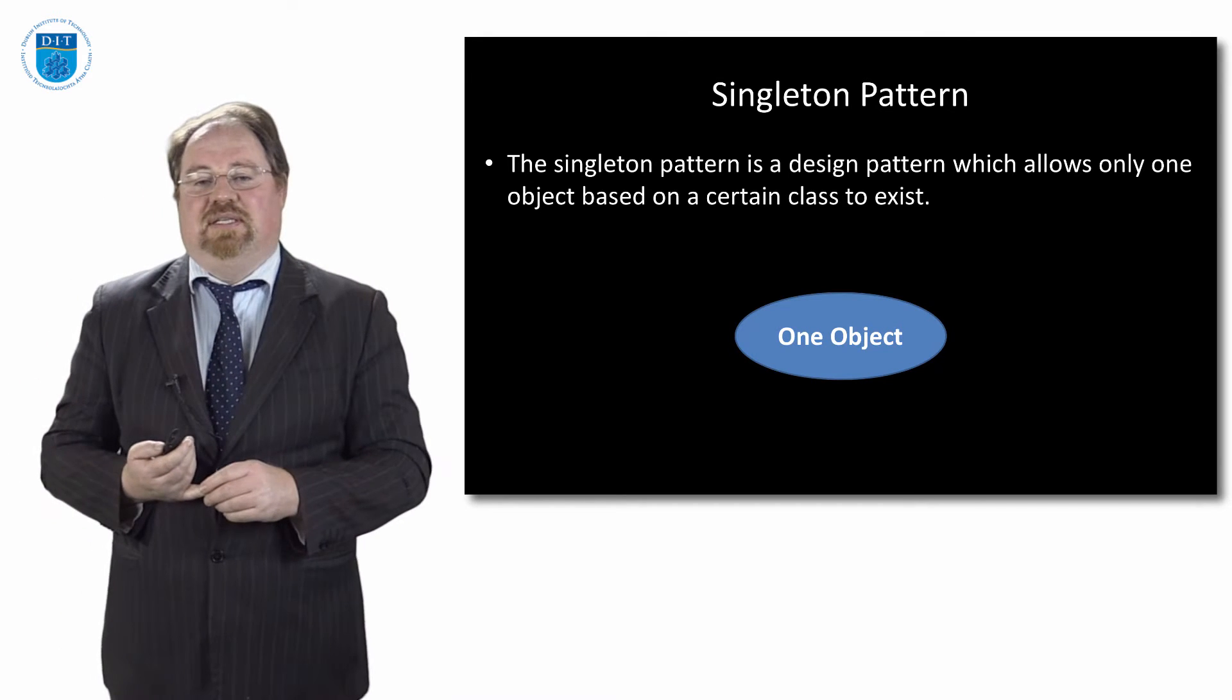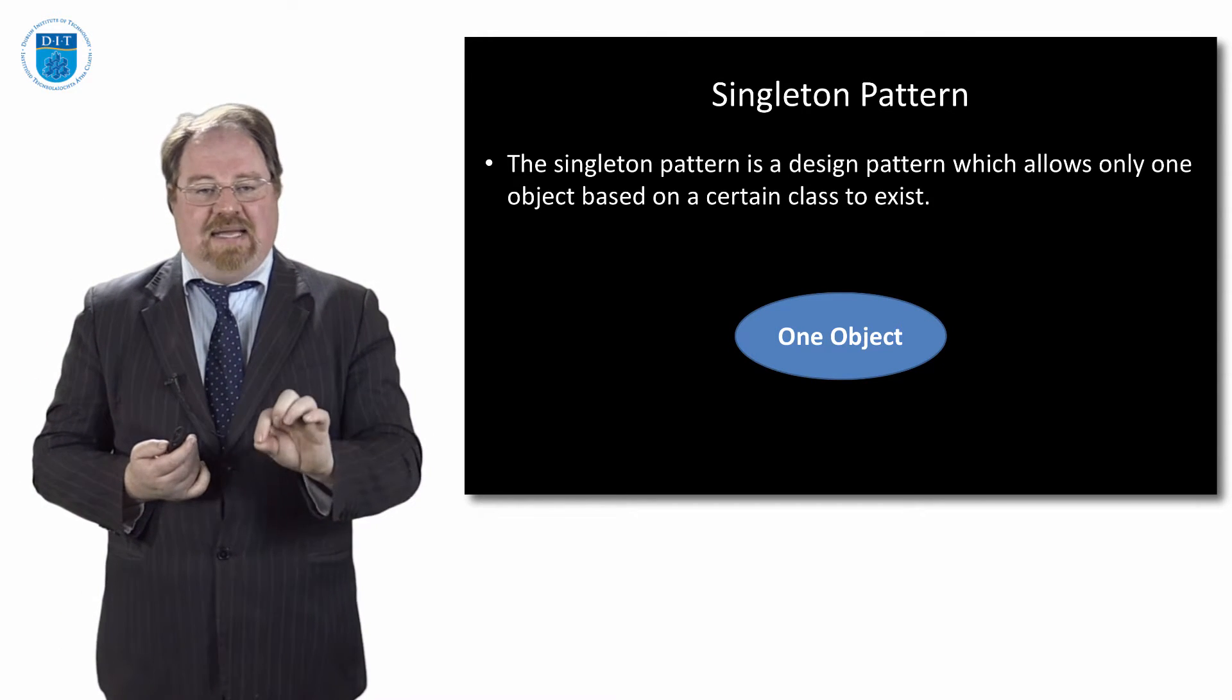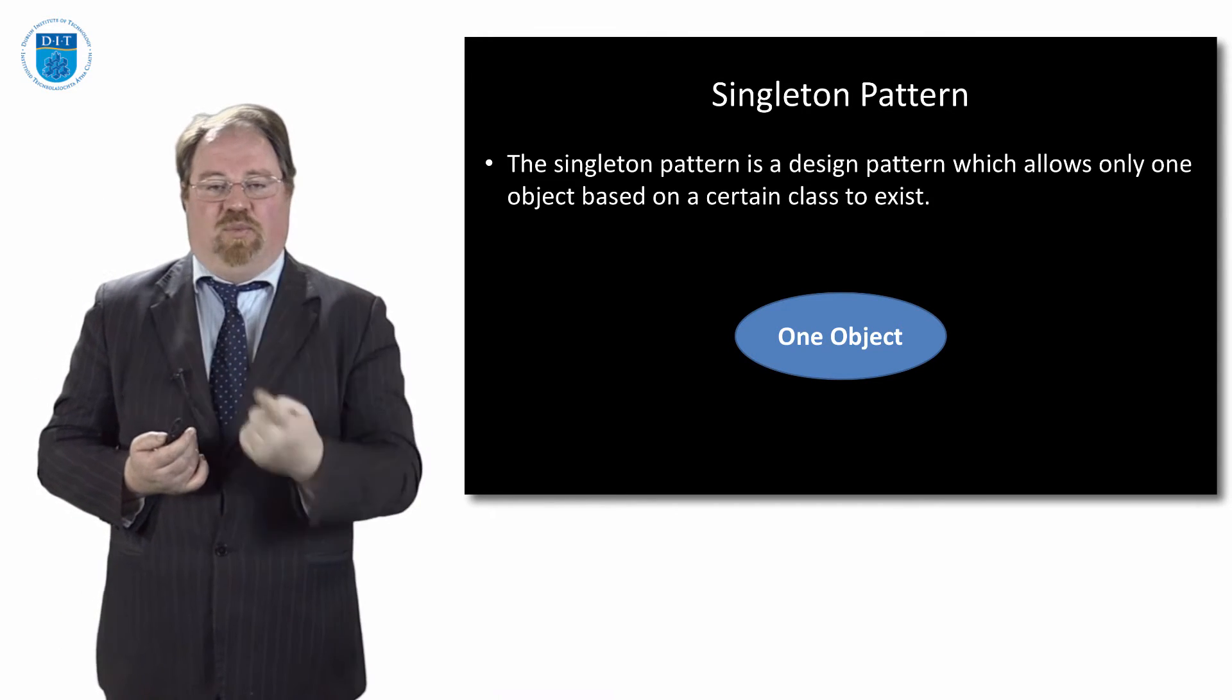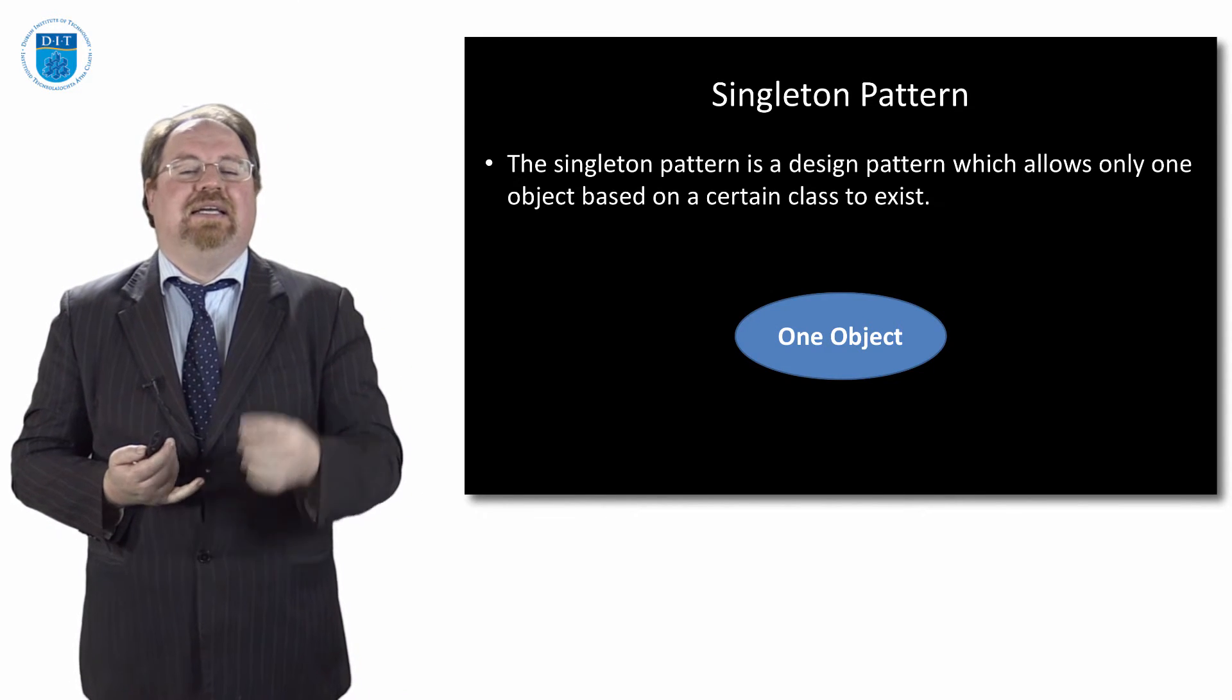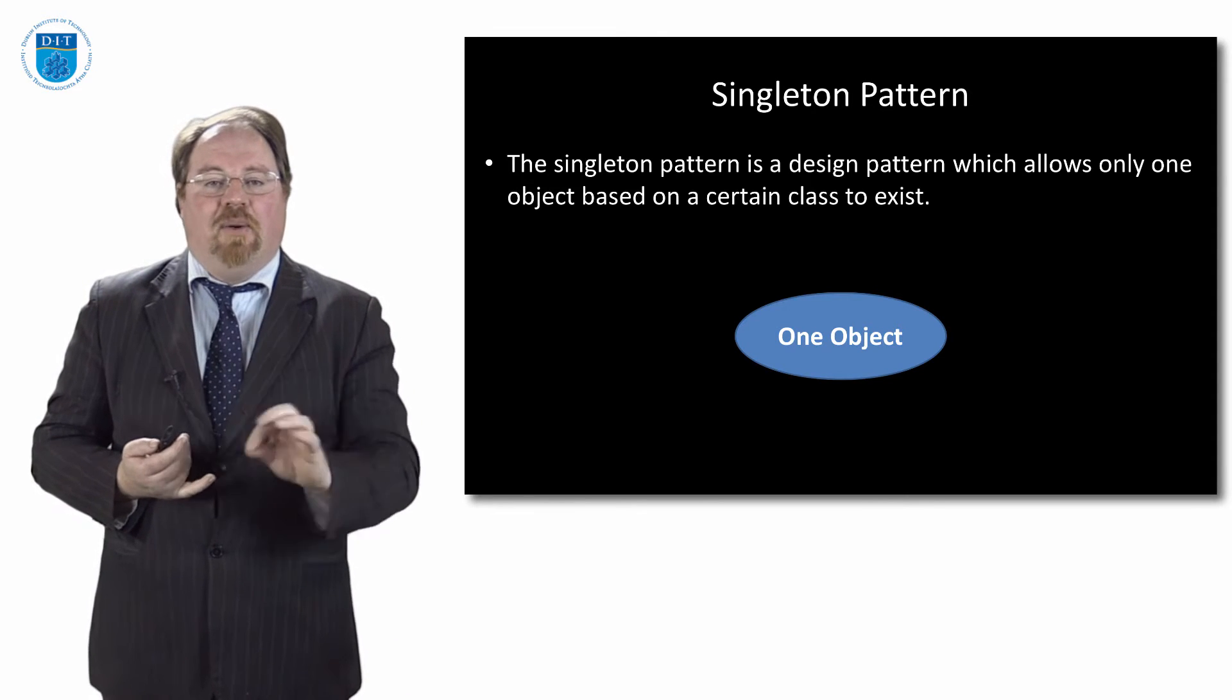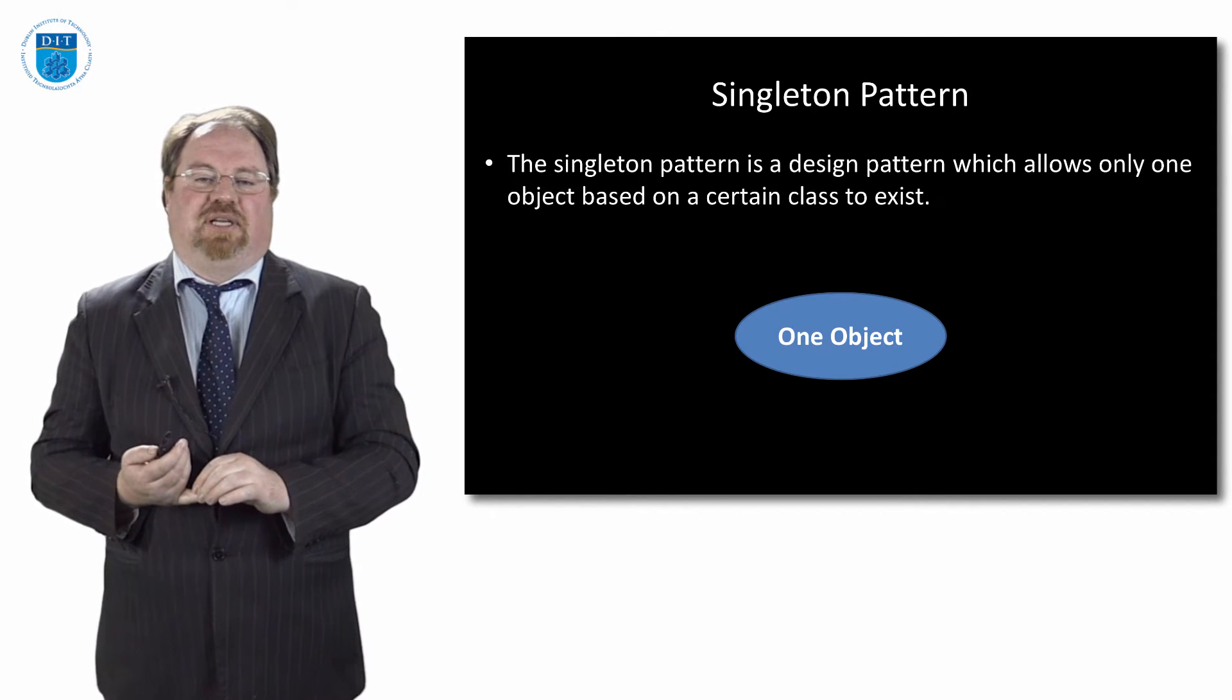The singleton pattern says, when I create a class, I can only instantiate it once only. So I can only create one object based on a particular class. And it will prevent me from creating more than one object based on a particular class.